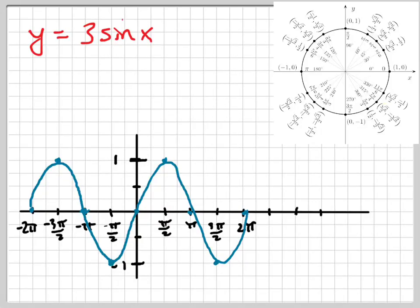Alright, let's take a look at the sine graph now if we alter it a little bit. For instance, if we multiply the sine by 3, what does that do to every value?